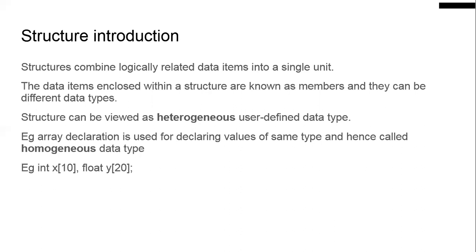Similarly, student data can be logically related — roll number, name, class, branch, semester, marks for each paper. All those things are logically related to that student. So structures combine logically related data items into a single unit, like a record.